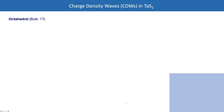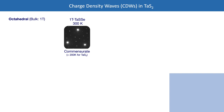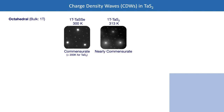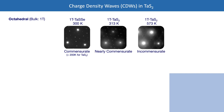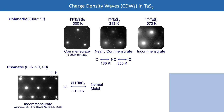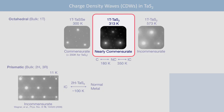Charge density waves undergo phase changes with temperature with distinct signatures in k-space. At low temperature we have the commensurate phase where the CDW is locked into the lattice. At room temperature we have a nearly commensurate charge density wave, and at high temperatures an incommensurate charge density wave. The commensurate phase has long-range order, the nearly commensurate phase loses long-range order, and the incommensurate phase has only short-range order — though the real-space structure is still being debated. For prismatic tantalum disulfide, the material behaves as a normal metal across these temperature ranges. I want to focus on what's happening at and around room temperature — the nearly commensurate phase.